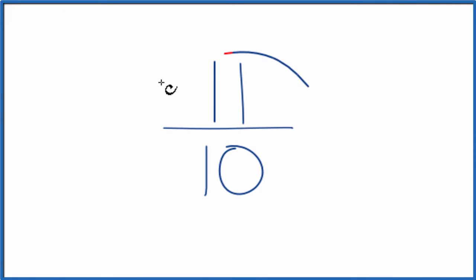Let's simplify the fraction 11 tenths. And here's how we do that. So for 11 tenths, we're trying to find a common factor, something that goes into both 11 and 10 evenly.